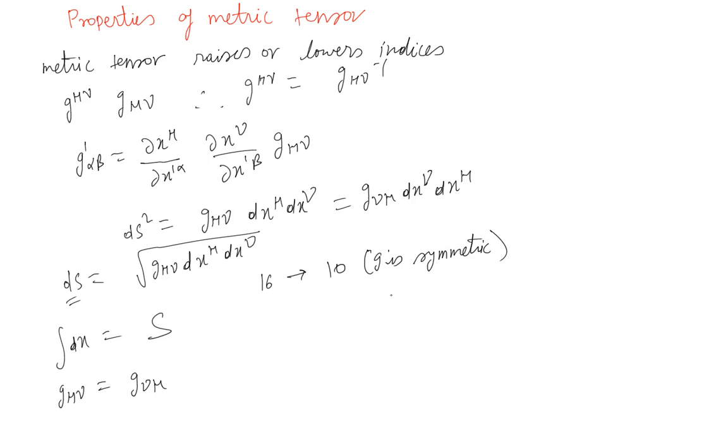One more thing: when I said it raises or lowers indices, that means not only for vectors but tensors too. For example, let's say T^αβ g_αμ will be T^β_μ. So from the purely contravariant components of tensor T, using g you actually got the mixed component of the same tensor T.